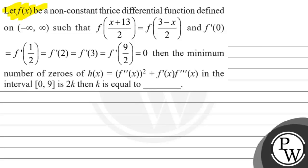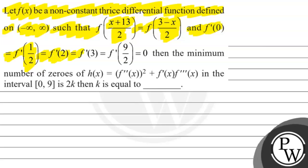Let's see the question. Let f(x) be a known constant thrice differentiable function defined on the open interval (-∞, ∞) such that f((x+13)/2) = f((3-x)/2) and f'(0) = f'(1/2) = f'(2) = f'(3) = f'(9/2) = 0. Then the minimum number of zeros of h(x) = [f''(x)]² + f'(x)·f'''(x) in the closed interval [0,9] is 2 times k. Find k.